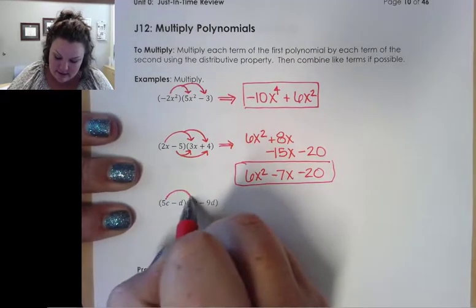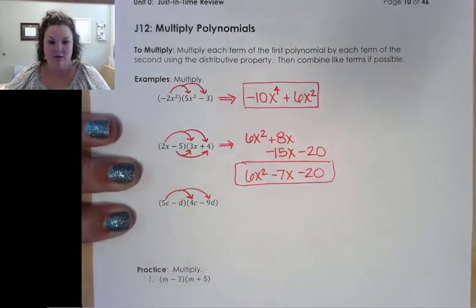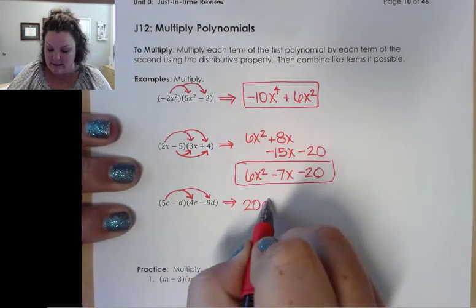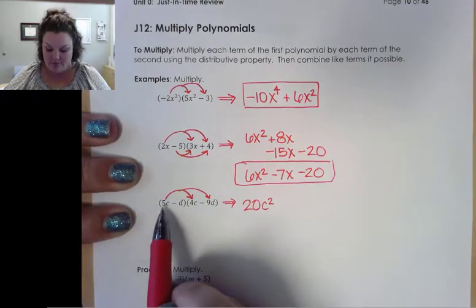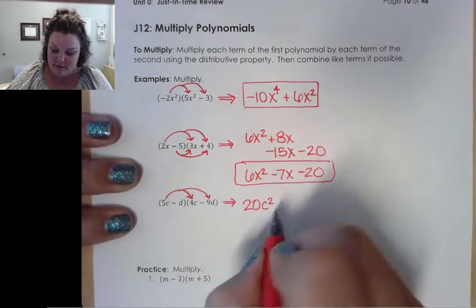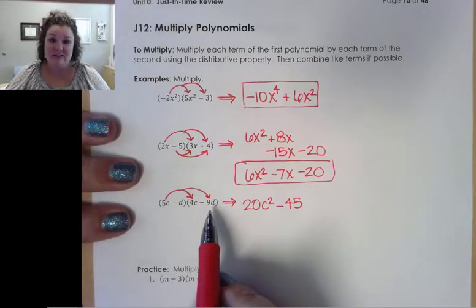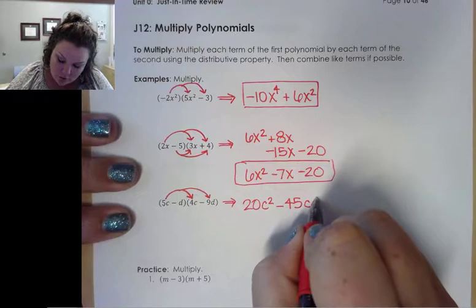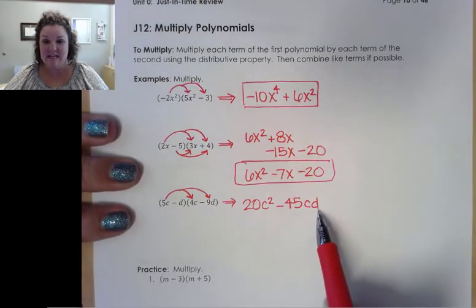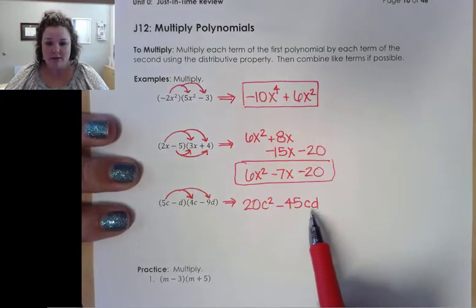We're going to go ahead and take this 5c and distribute it to each of the terms in the second polynomial. So 5c times 4c gives me 20c squared. And then I want to distribute 5c times negative 9d. So 5 times negative 9 is negative 45. And then c times d is just cd. And I'm going to put them in alphabetical order. It doesn't really matter if I write this as 45cd or 45dc, but a lot of times we'll write them in alphabetical order. So that's what I'm going to stick with.